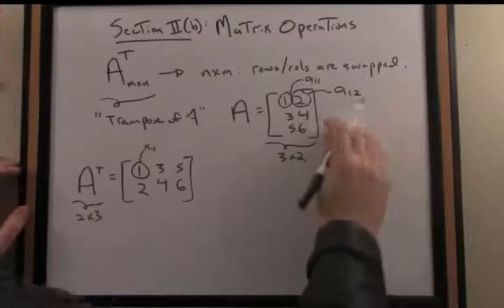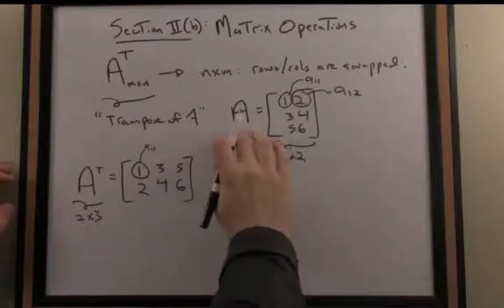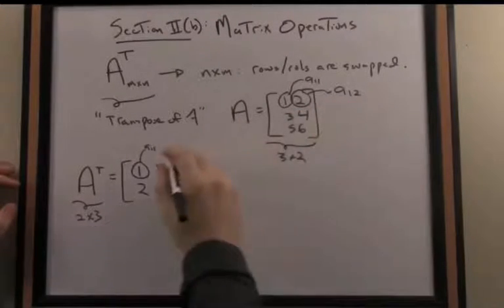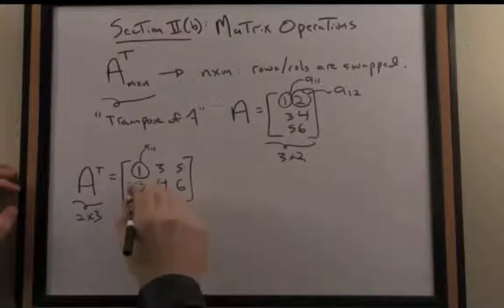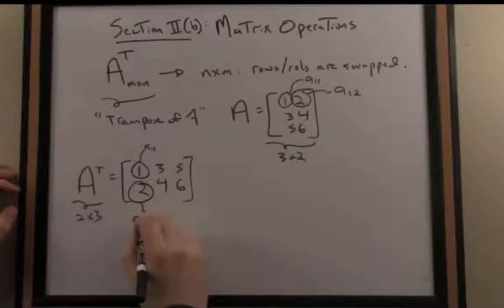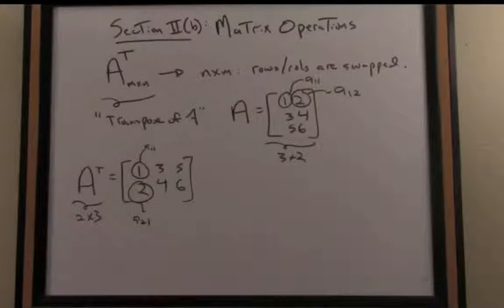when I apply the transpose to this element, its indices are swapped, so A12 becomes A21, and vice versa for the rest of the elements in the matrix.